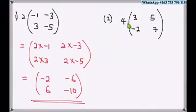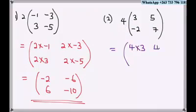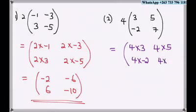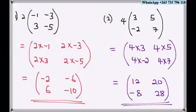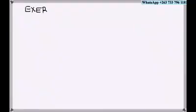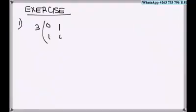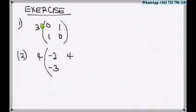For the next example, four is the scalar. So four times three, four times five, four times minus two, four times seven. This gives us: four times three is twelve, four times five is twenty, four times minus two is minus eight, and four times seven is twenty-eight. That is our final answer.